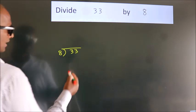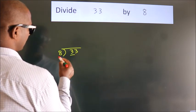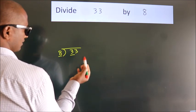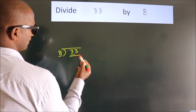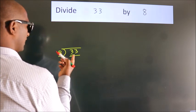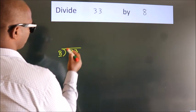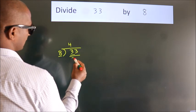Next. Here we have 3. Here 8. 3 is smaller than 8, so we should take 2 numbers: 33. A number close to 33 in the 8 table is 8 fours 32.